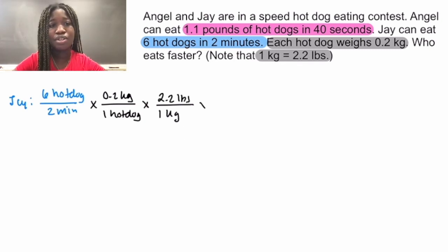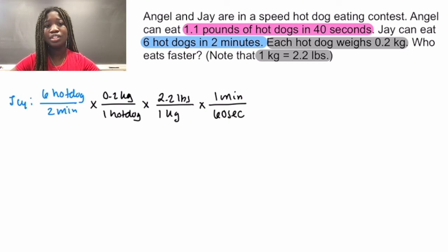Let's get to pounds per second. We know that in 1 minute there are 60 seconds. And so if you cancel all the units, multiply and simplify down, you'll find that Jay can eat 0.022 pounds of hot dogs per second.